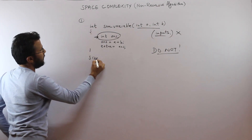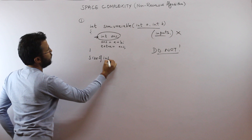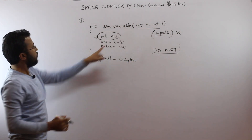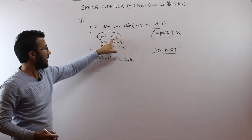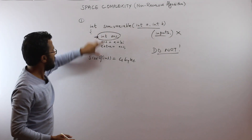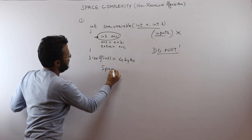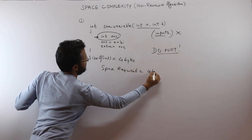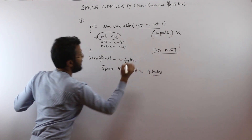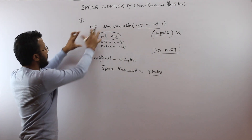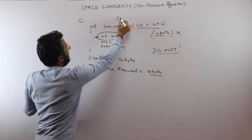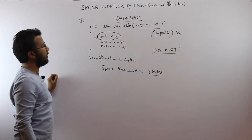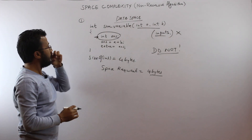The size of an integer is 4 bytes. There is just one variable declared in this particular function — that is 'ans'. There is no other variable. So the space required for this particular algorithm is 4 bytes. We are just considering the data space required for storing the data, that is the variable.